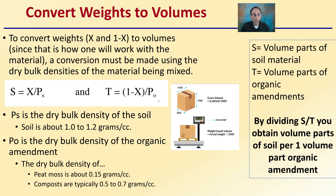PO is the dry bulk density of the organic amendment. The dry bulk density for peat moss is 0.15 grams per cc, and compost is typically 0.5 to 0.7 grams per cc. If you're using a different organic amendment, research its bulk density. S is the volume of parts of soil material, T is the volume of parts of organic amendment, and when you divide S by T, you obtain the volume of parts of soil per one volume of organic amendment.